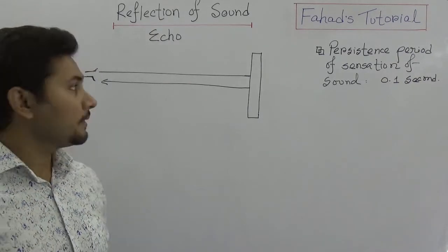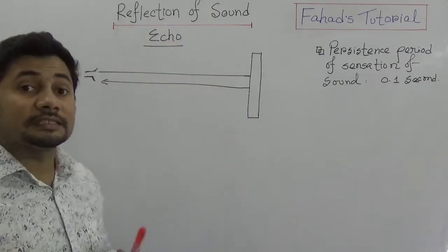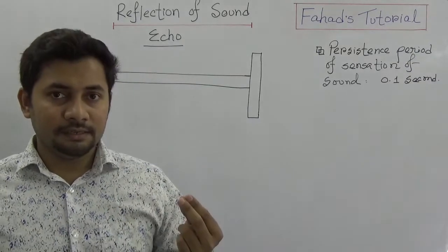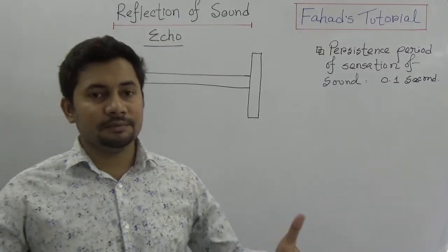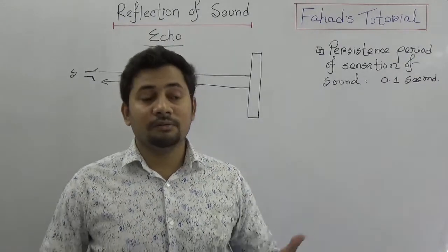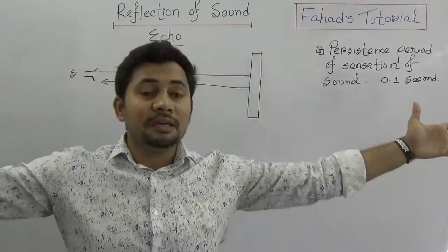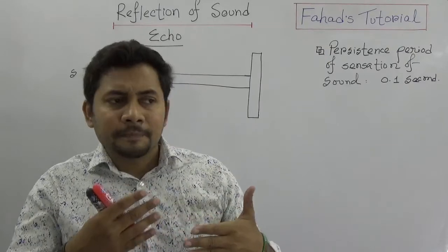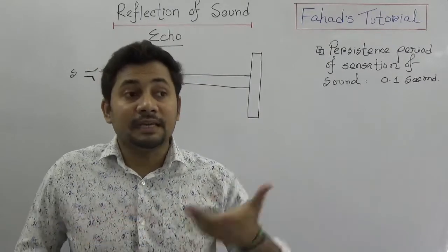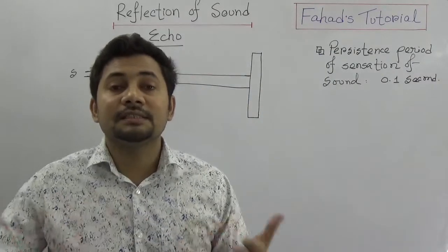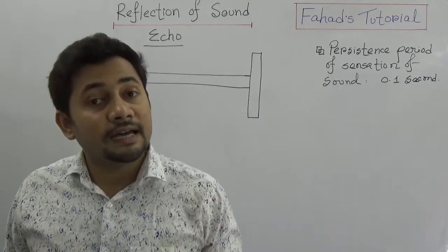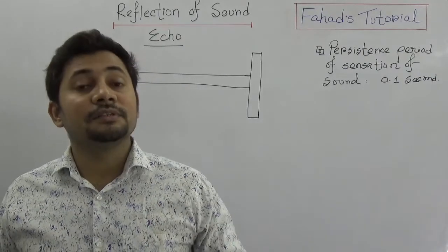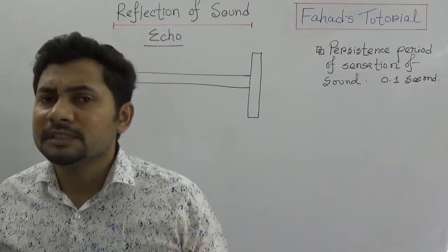What is echo? Echo is simply the result of the reflection of sound — when we can hear the produced sound repeatedly after reflection. For example, if somebody is standing in front of a big mountain or in a big room and says 'hello,' after some time the sound comes back to the person again — 'hello, hello.' This repetition of sound due to reflection is known as echo.